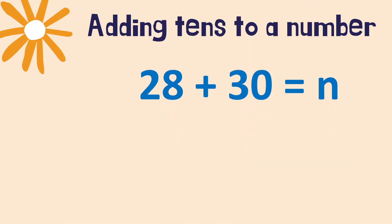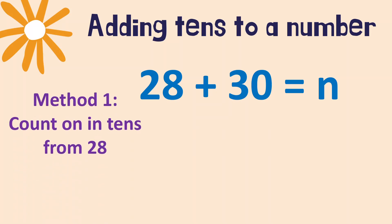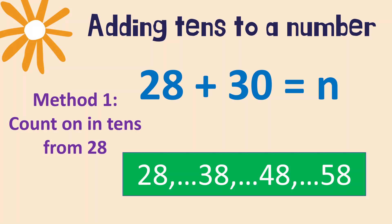Let's say 28 plus 30 equals what? The first method: we count on in tens from 28. How many tens are we going to add? Three, because three tens is 30. Start from 28: add 10 → 38 (first ten), add 10 → 48 (second ten), add 10 → 58 (third ten). So 58 is the answer. Very good!